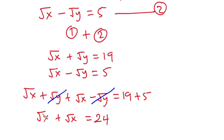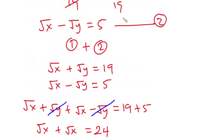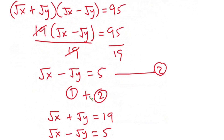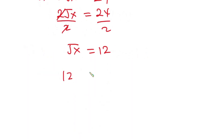So 2 times square root of x equals 24. Dividing each side by 2, square root of x equals 12. Now let's substitute this into equation 1: 12 plus square root of y equals 19.